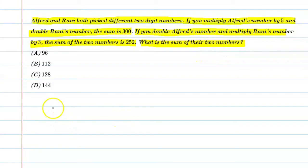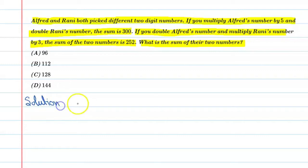So let's start this question. Let Alfred's number be x and Rani's number be y.